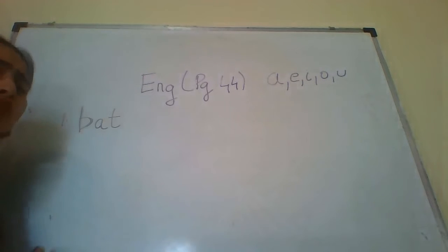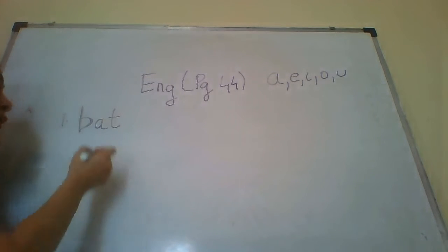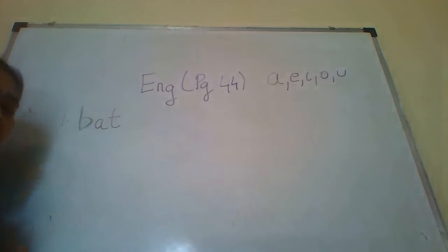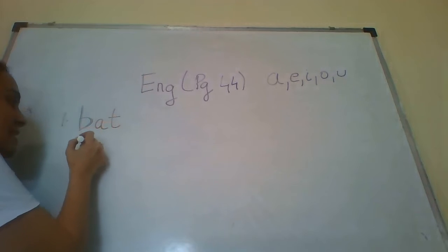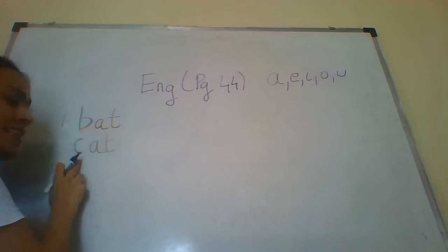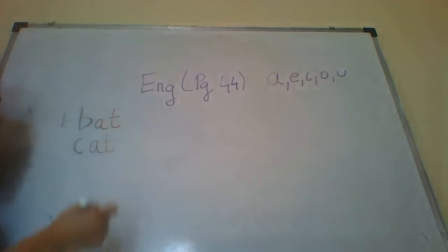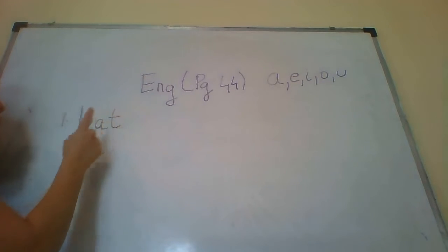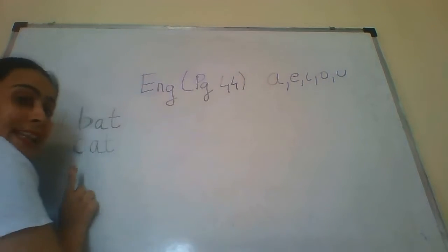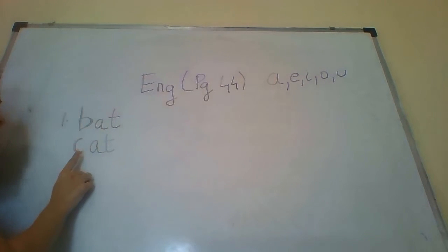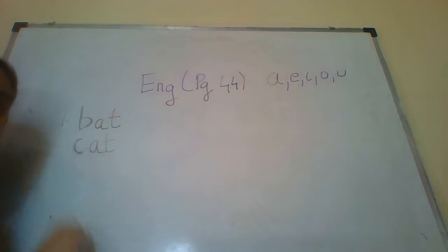Let me write a word — C-A-T. So what is this? This is 'cat'. So we have the vowel A over here. I made a word with vowel A that is C-A-T, cat. So we have a new word: C-A-T, cat.